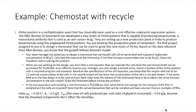Based on the specifications of the cell separator, you know that the recycle ratio has to be 1.5 and the concentration of the cells in the recycle stream will be twice the concentration of the cells in the exit stream. If the same feed as in the first design is to be used as fresh feed, what does the volume of this chemostat have to be to obtain the same biomass concentration in the exit stream? Again, draw the flow sheet before solving the problem. If the cost associated with building a new chemostat is rupees 10,000 per liter, what will be the savings for the company if the filter is installed and the cells are recycled?